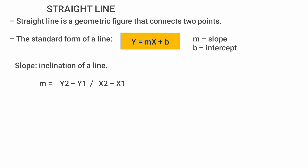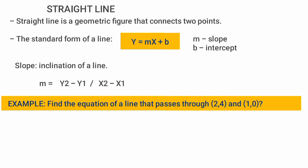This is an example. The slope formula uses Y2, Y1, X2, and X1. Let's see an example: find the equation of a line that passes through (2, 4) and (1, 0). So M is equal to Y2 minus Y1 over X2 minus X1. M equals (4 minus 0) over (2 minus 1), which gives four over one, so the slope M equals 4.